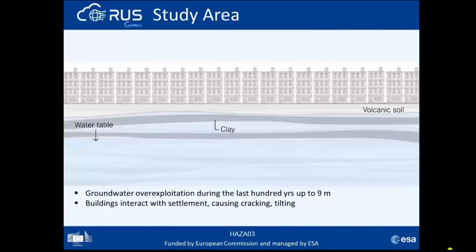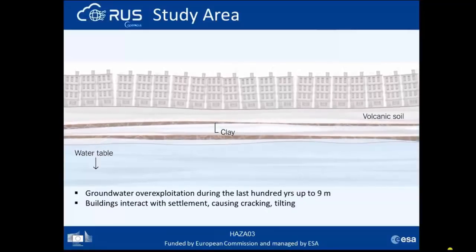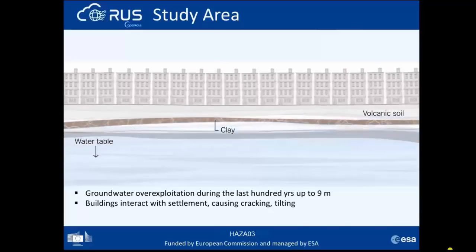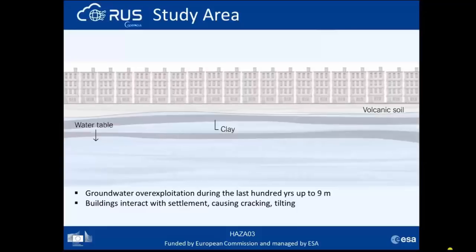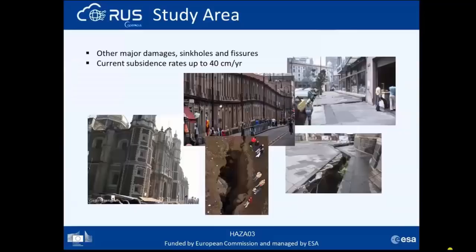Groundwater-related subsidence often results in major damage to urban areas. In Mexico City, as you see here in this slide, the buildings interact with the settlement and cause cracking, tilting, and other major damage. In many places, large sinkholes open up as well as surface cavities.